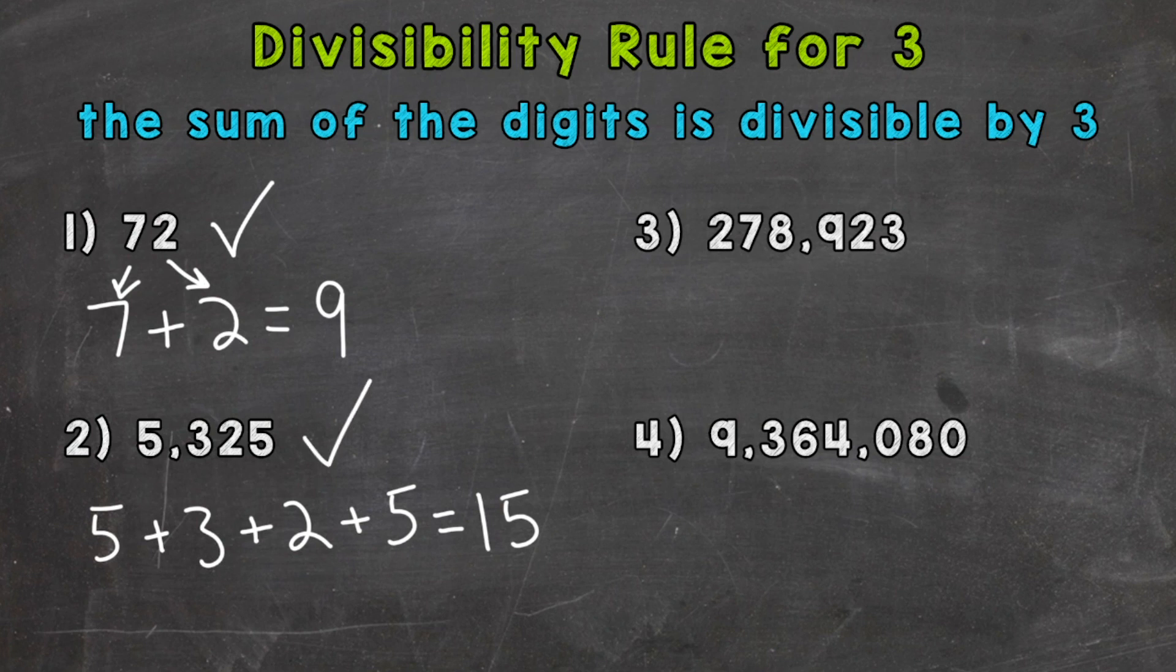On to number 3 where we have 278,923. Let's find the sum here. 2 plus 7 plus 8 plus 9 plus 2 plus 3.